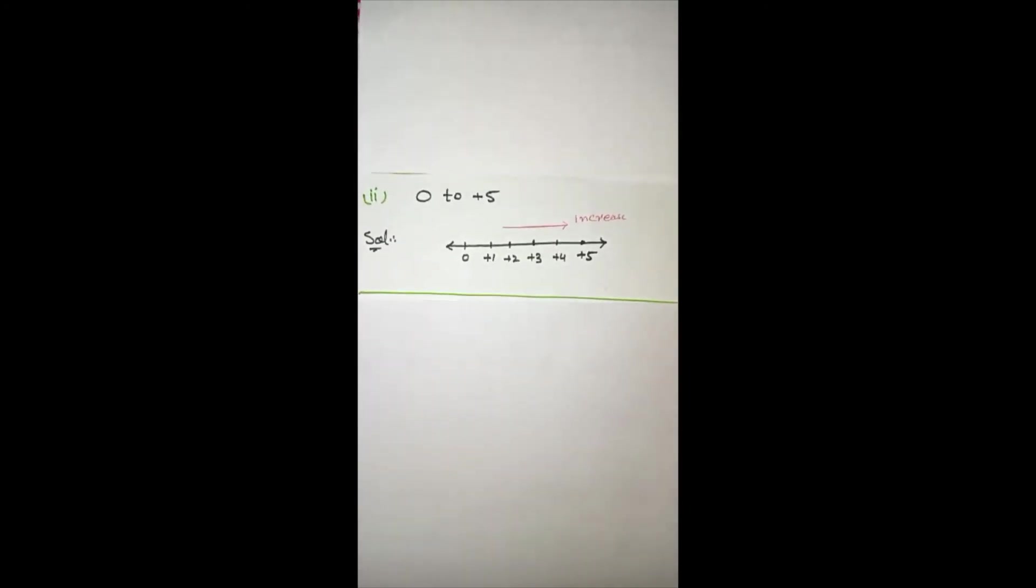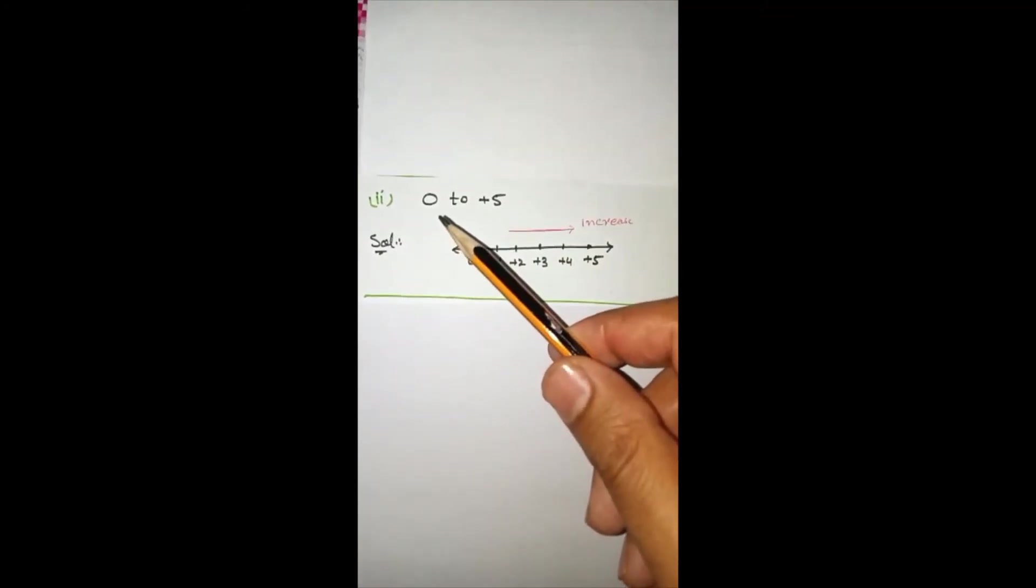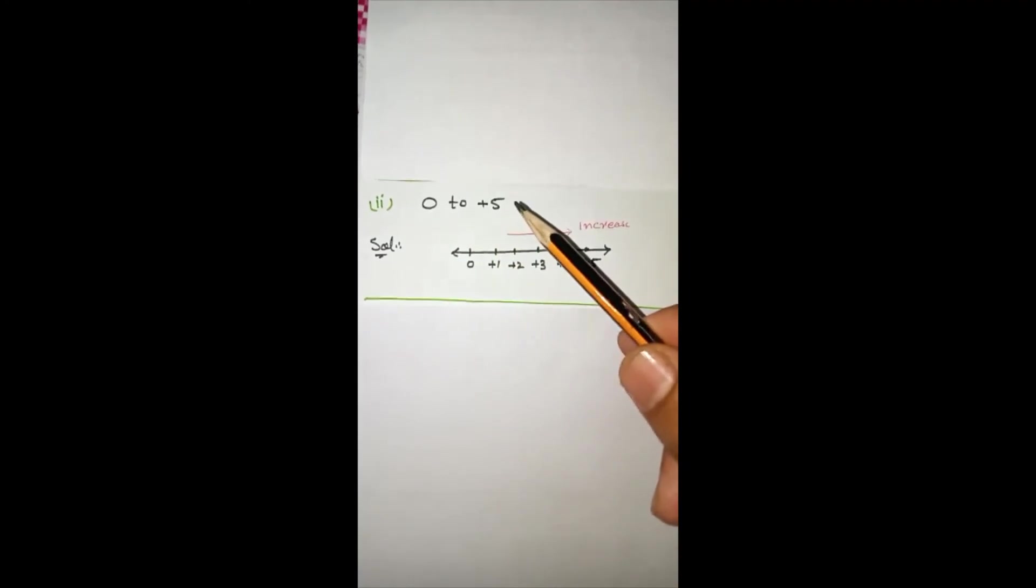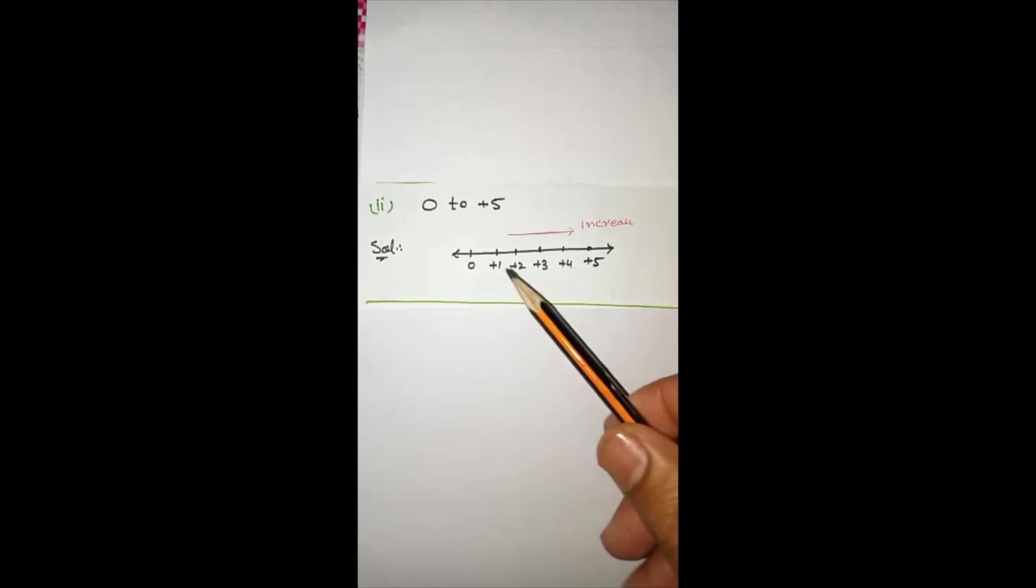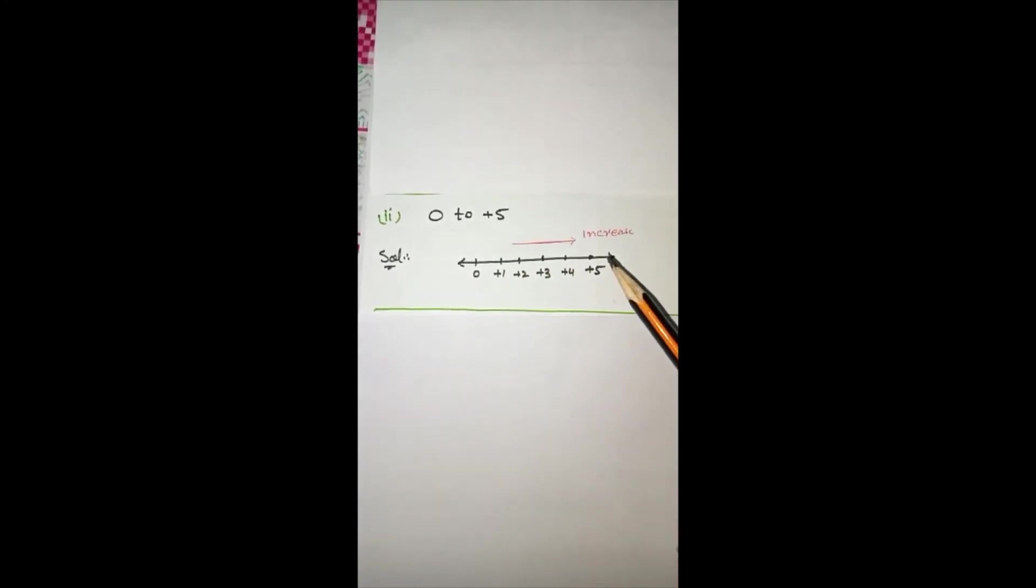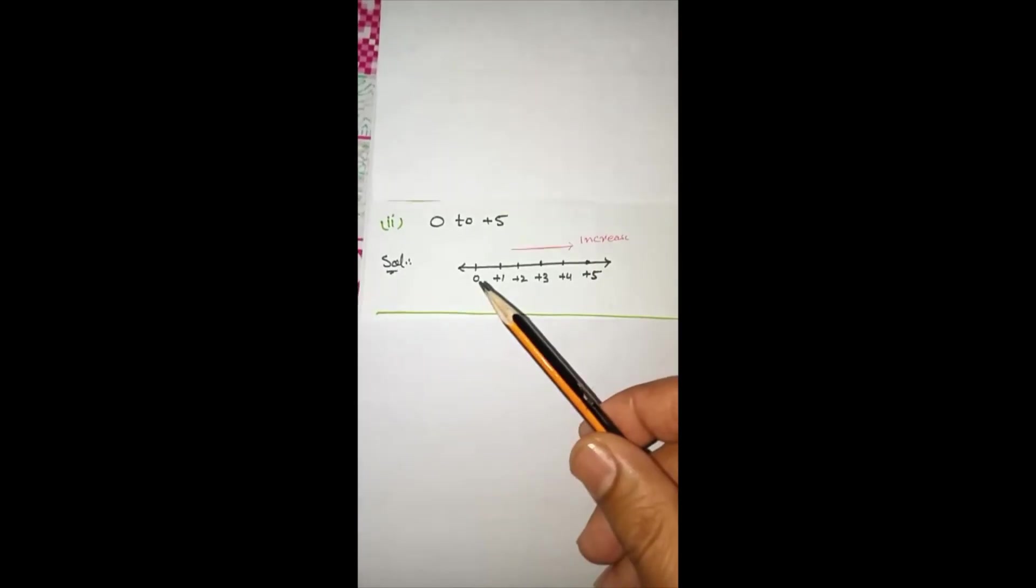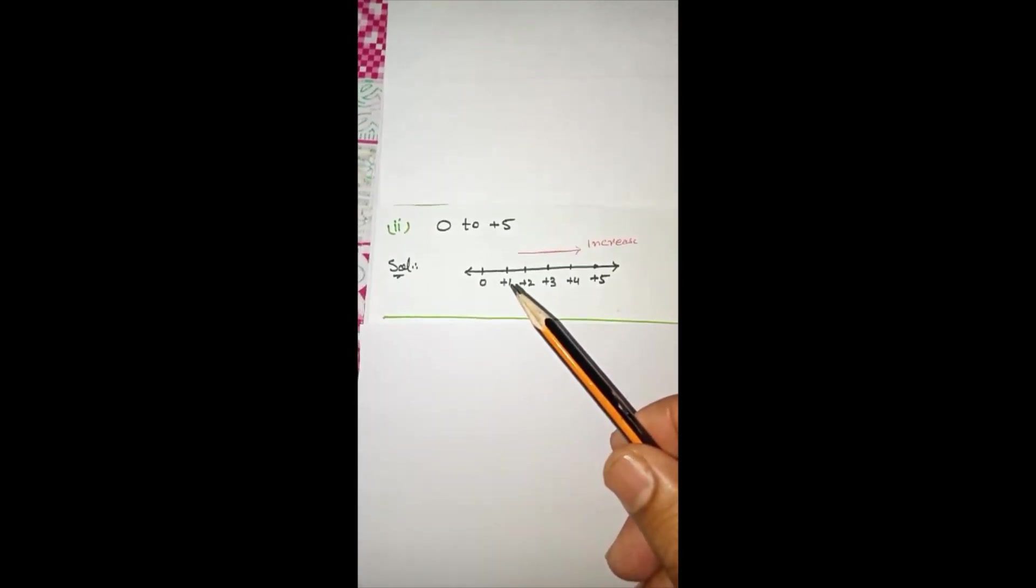Question number 2: From zero to plus 5, mark these numbers on the number line. Now we will first draw the number line, and first we mark zero. And then on the right side we mark: